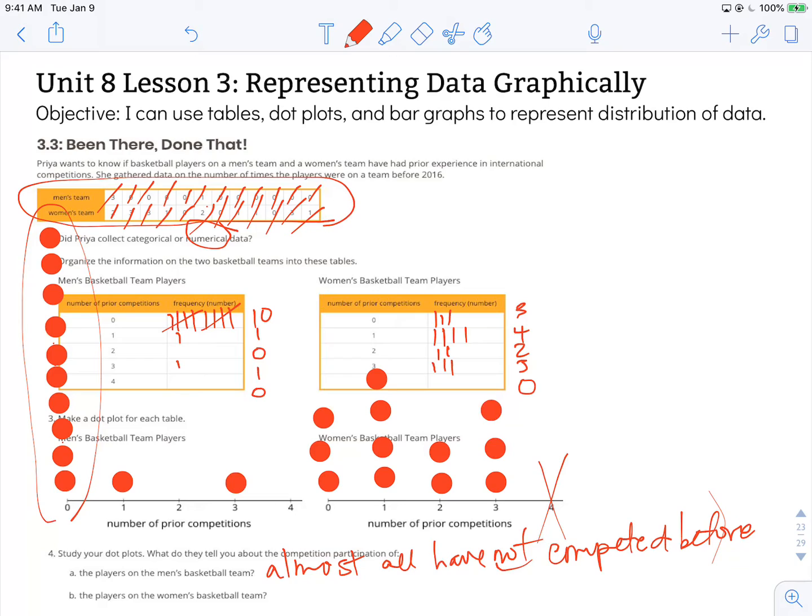When we look at the women's data, we have all but three have competed before. So we have one, two, three, four, five, six, seven, eight, nine out of twelve. So three fourths of the women have competed internationally before. So we could say that 75% have competed internationally before. So there's more experience for prior competitions internationally with the women's basketball team than there is for the men.